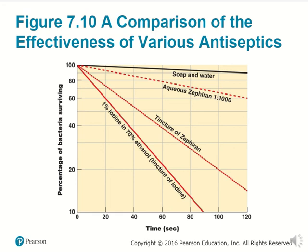A comparison of the effectiveness of various antiseptics shows that typically less and less bacteria survive as disinfectants are applied over time. The best performer appears to be 1% iodine in 70% ethanol, essentially a tincture of iodine. Soap and water doesn't exactly kill microbes, but does at least do a job of disinfecting common surfaces.